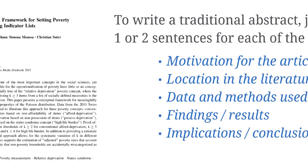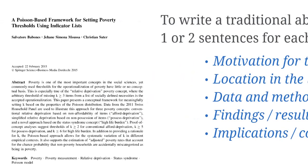Here's an example of an article in which I've done just that in Social Indicators Research. First I motivate the article by saying poverty is a really important concept. I locate it in the literature on relative deprivation, and I then explain that the data we use in the article is from the Swiss Household Panel.